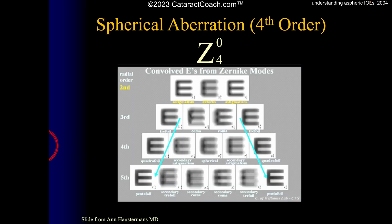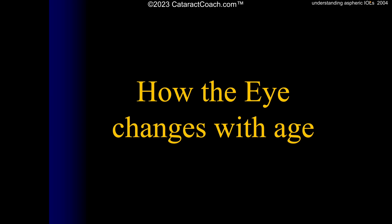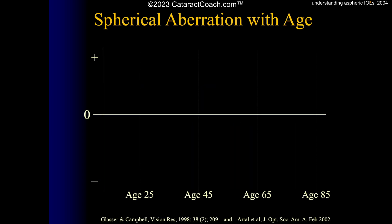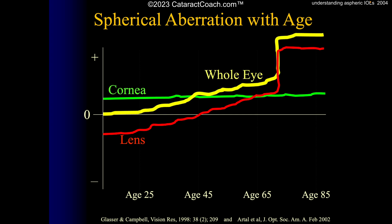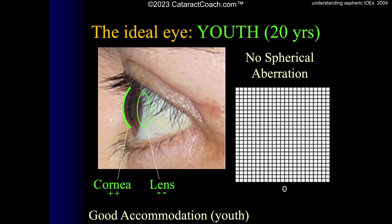How does the eye change with age? Normal corneas stay about the same throughout life — a little positive spherical aberration. The crystalline lens changes throughout life, and therefore the overall eye changes too. In youth, the cornea has a little positive spherical aberration, the normal human crystalline lens has a little negative spherical aberration, and as a result the overall eye has essentially no spherical aberration — and as a 20-year-old you have great accommodation.